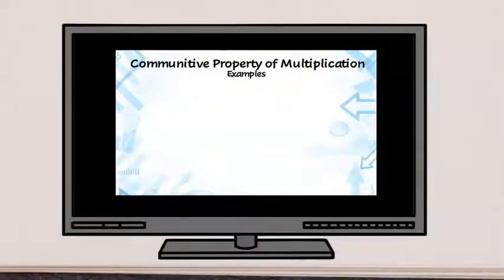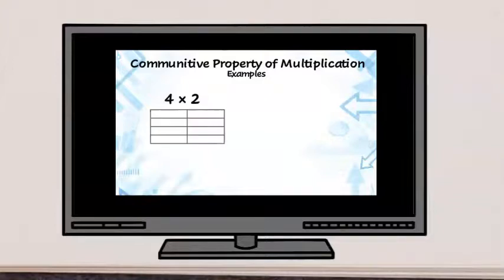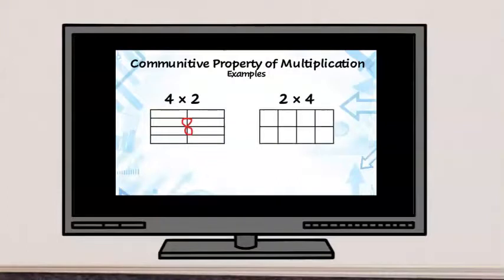Consider 4 times 2. That would be 4 rows of 2, which equals 8 units. That's the same as 2 times 4, which would be 2 rows of 4, and that also equals 8.